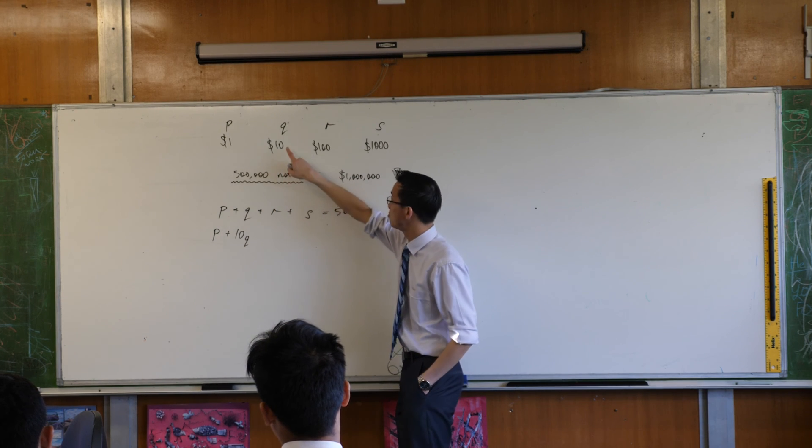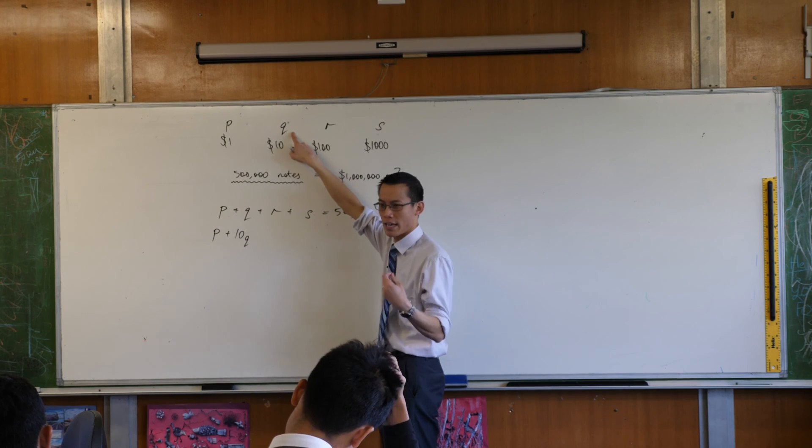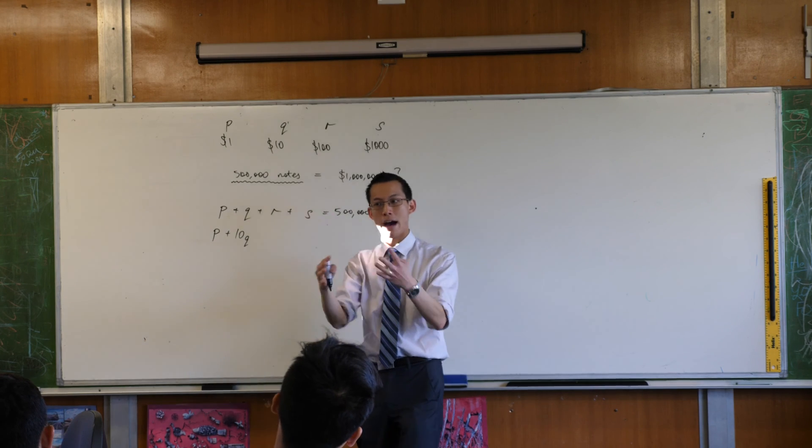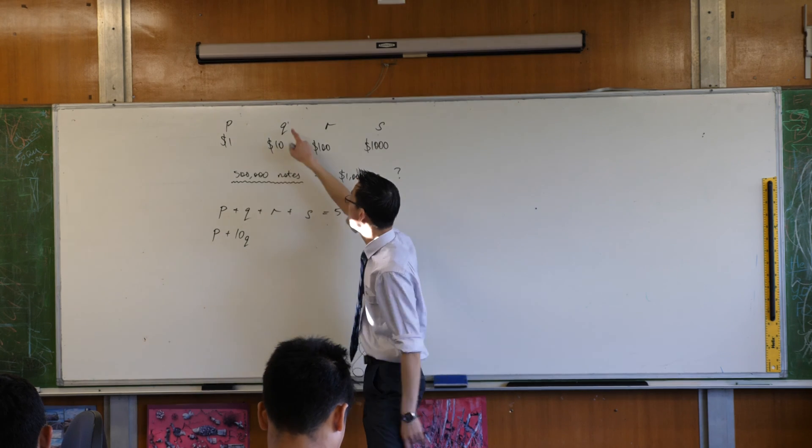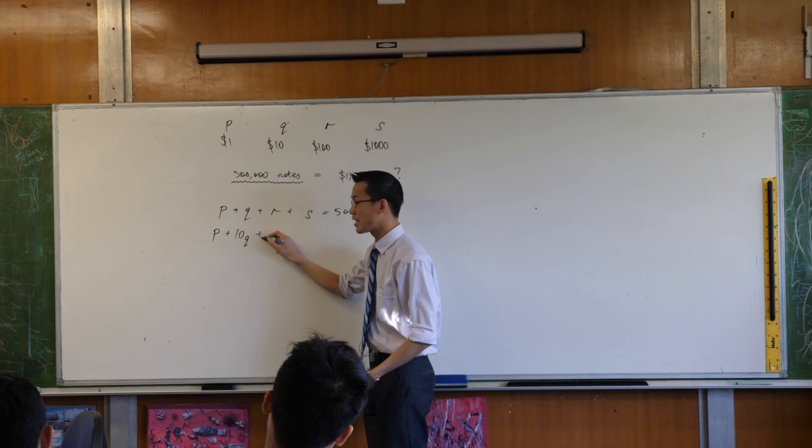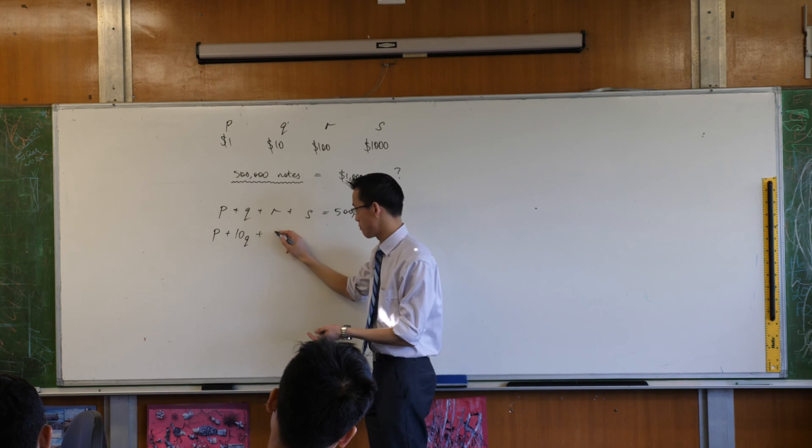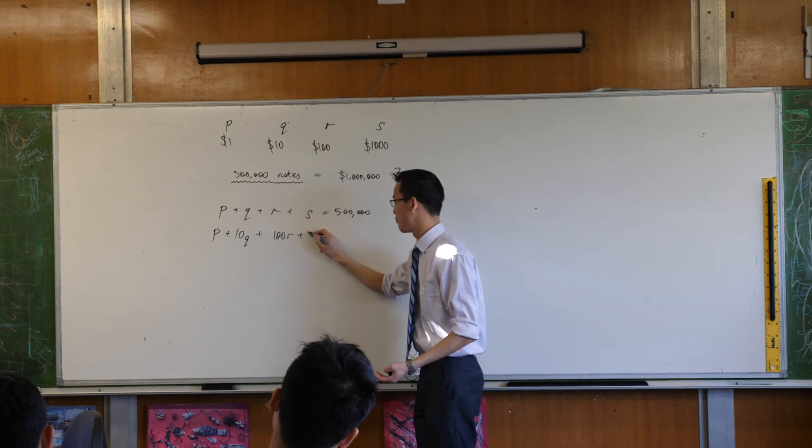What's 10Q? What is the significance of 10Q? Think about this, right? Q is the number of $10 notes you've got. So therefore, 10Q is the total value of all of your $10 notes. Does that make sense? You've got Q of them. If you had five of them, then the total value would be 50, right? And you can say the same thing about your $100 notes. What's the value? 100R. And the same of your $1,000 notes? 1000S.